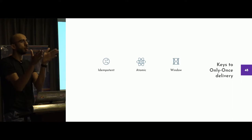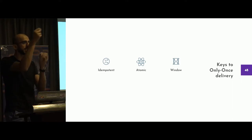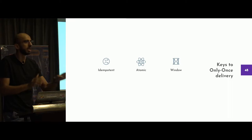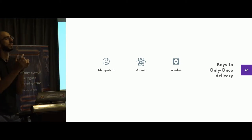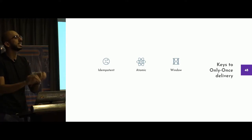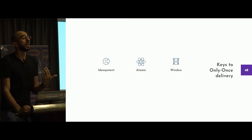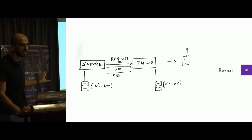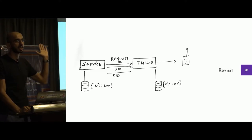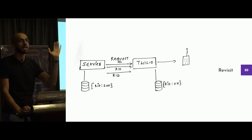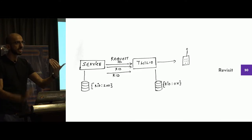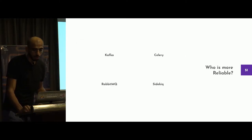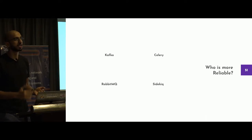Maintain idempotency only within a day or an hour — up to you. If I see this request ID in the next five minutes, I'm not going to process it. But if you send it again after that window, I'm going to process it again. Hence, these are the three key attributes of exactly once delivery — idempotency, atomicity, and a window — because you have to design these constructs that way. I have a request ID, I send it to Twilio, it processes it once, and then it calls the user. Hopefully Twilio has some sort of request ID notion in it. Which one's more reliable now — Kafka, Celery, RabbitMQ, Sidekiq? Does anybody believe that if I just install one of these, my problem will be solved?